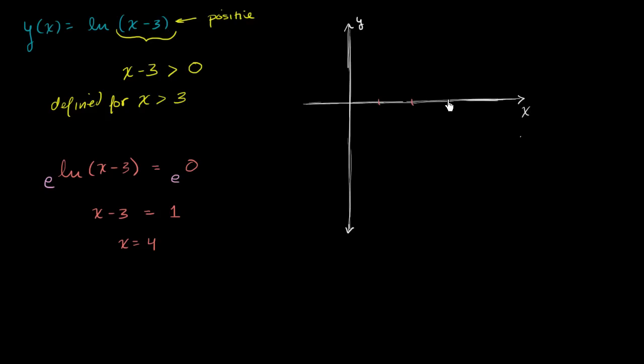1, 2, 3, and 4. So that right over there is the point x is 4 and y is 0. 4 minus 3 is 1, natural log of 1 is 0.